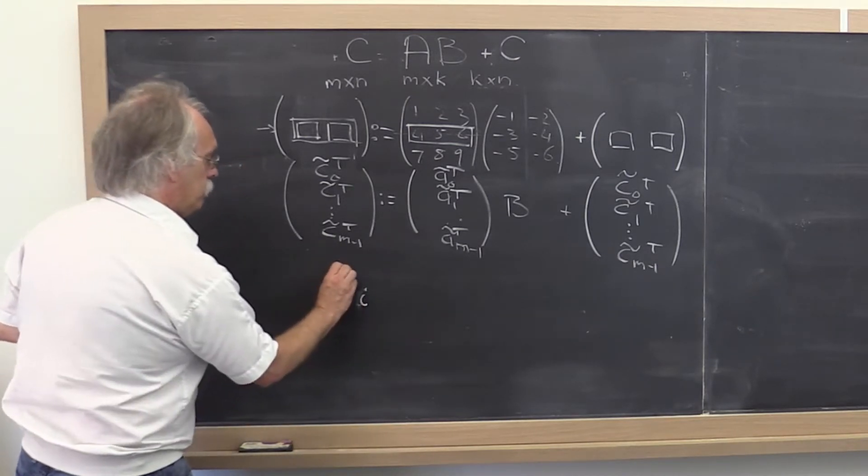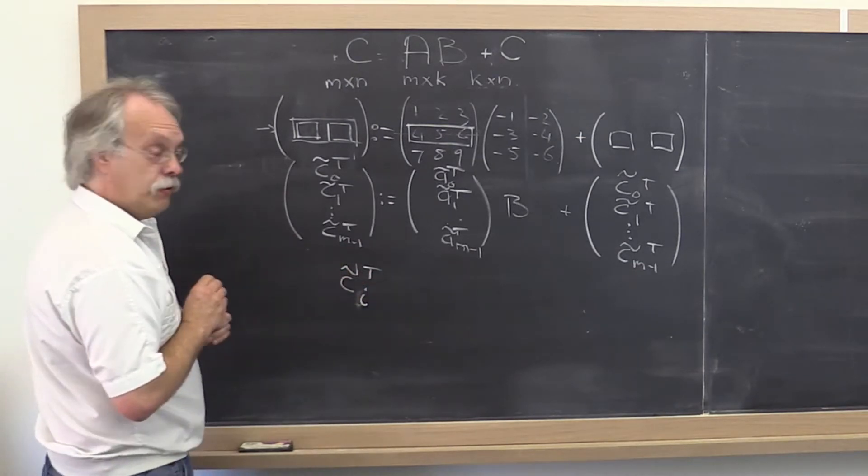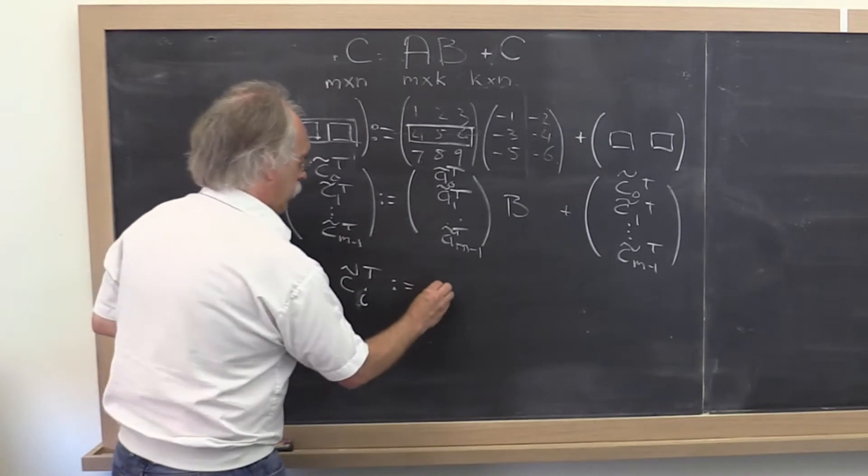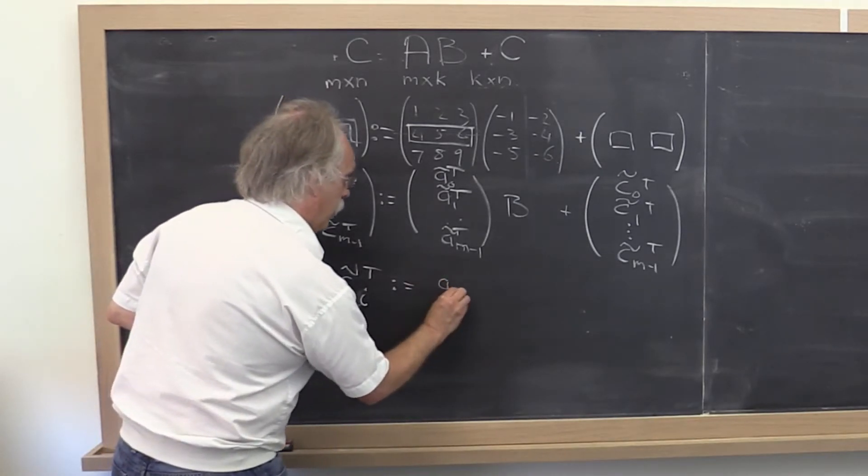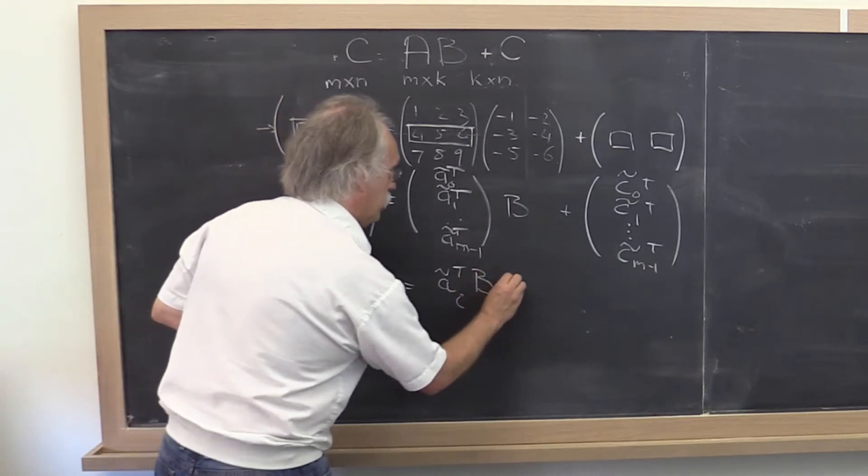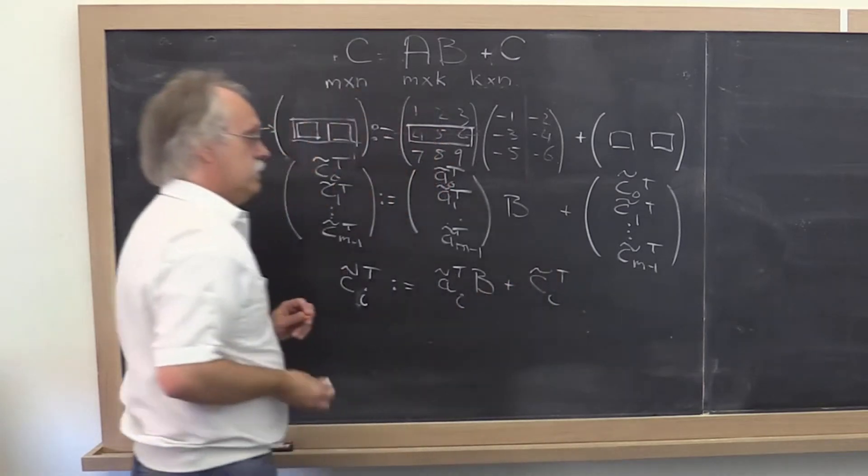And from that we conclude that C_i tilde transpose, that's just the label for the i-th row in C, should be computed as the corresponding row in A times B plus that row in C.